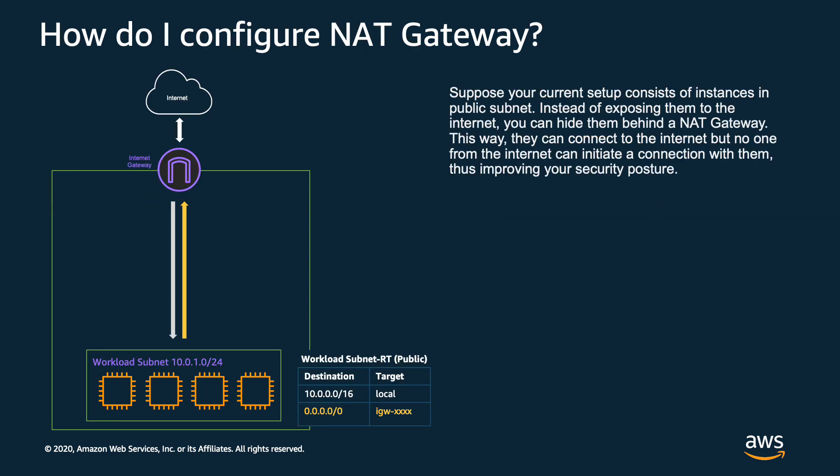Suppose your current setup consists of instances in public subnets. Instead of exposing them to the internet, you can hide them behind a NAT gateway. This way you can connect to the internet, but the internet cannot connect or initiate back. This improves your security posture.